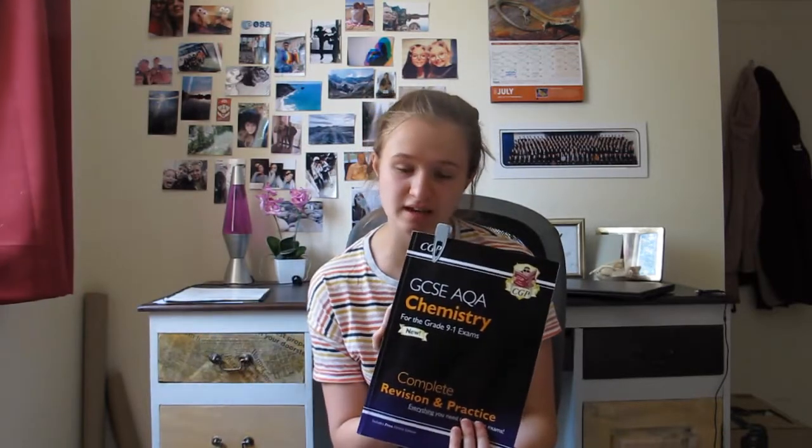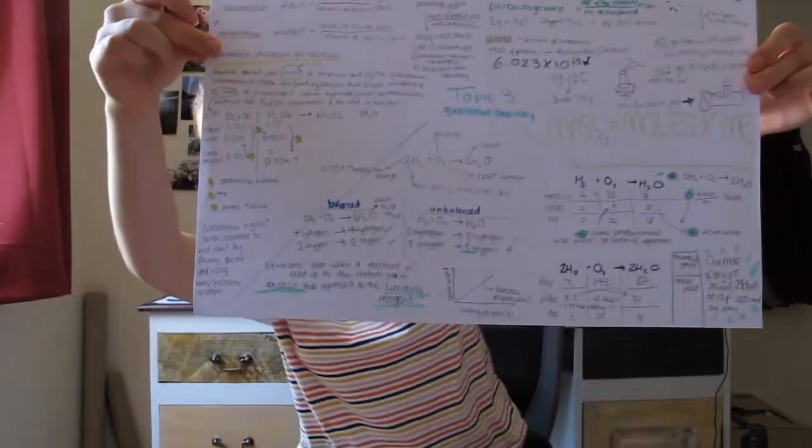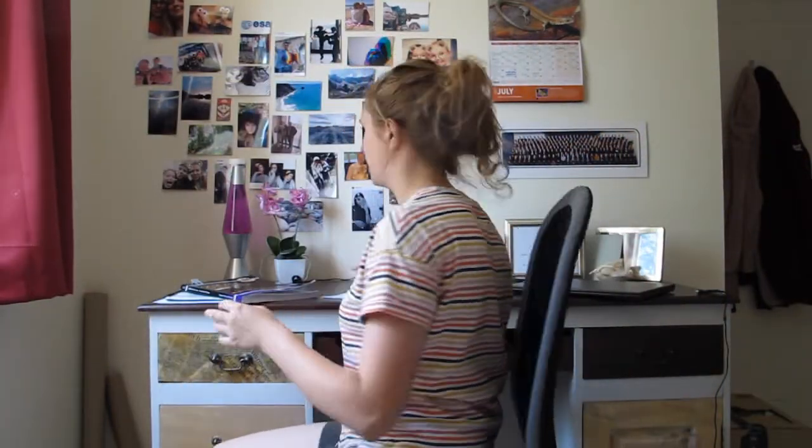So today we are doing topic 3, quantitative chemistry from the GCSE AQA Chemistry CGP textbook. As normal, we're making a mind map. I have made a mind map, look at that, isn't it nice? All colour coded. Let's get into the video.